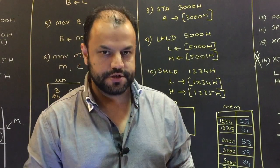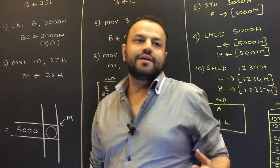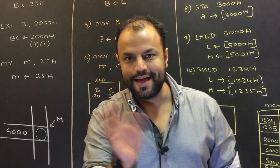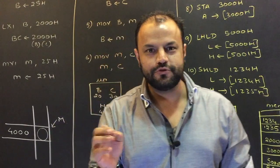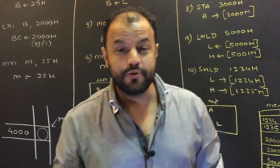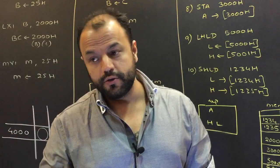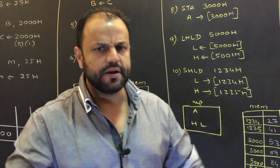There are 16 instructions in that group. All the 16 instructions are there on the board. As you can understand, data transfer instruction means we are not doing any arithmetic or logic operation. We are simply transferring data from one place to the other. What are the places? You could transfer data from a register to another register or from a register to a memory location or from a memory location to a register. Or you can put data directly into a register.